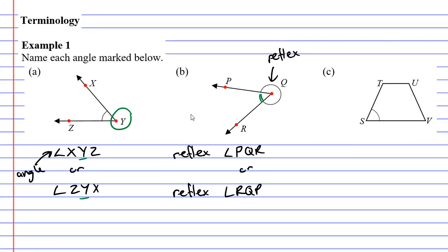Lastly, we'll look at question C. They want us to label this angle down here like so. You'll notice that we've got the letter S as our vertex. So we're going to call this angle TSV, or we could label it as angle VST.